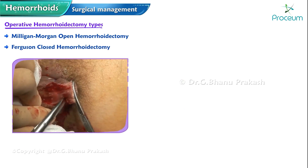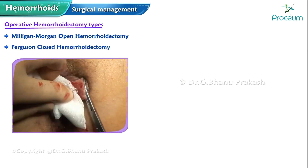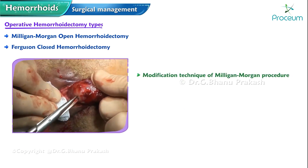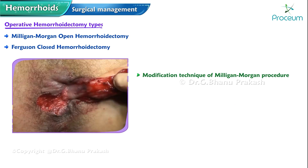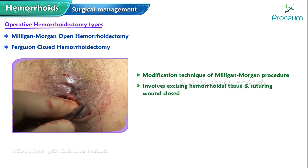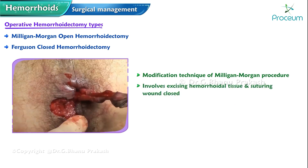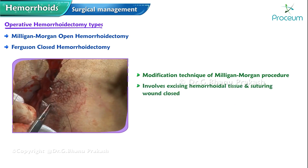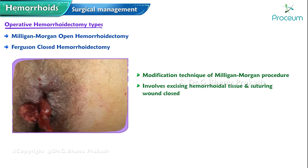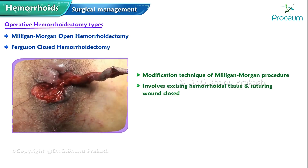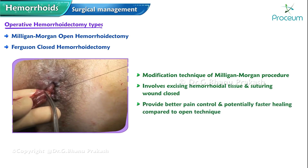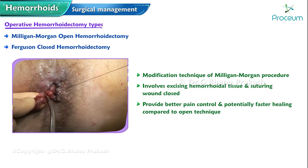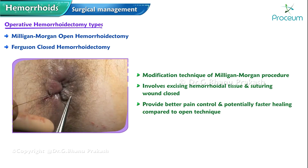The Ferguson closed hemorrhoidectomy is a modification of the Milligan-Morgan procedure. It involves excising the hemorrhoidal tissue and suturing the wound closed. The closed technique may provide better pain control and potentially faster healing compared to the open technique.